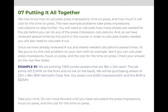In order to keep moving forward, we need to put it all together. We now know how to calculate press impressions, the time on press, and how much it will cost for that time on press. The next example problems take press impression calculations one step further. You will need to calculate how many sheets are needed for the job before you can do any of the press calculations. In order to calculate the sheets needed, you must first calculate number out, and then use the number out to calculate the number of press sheets needed.